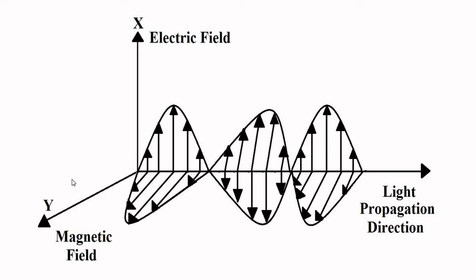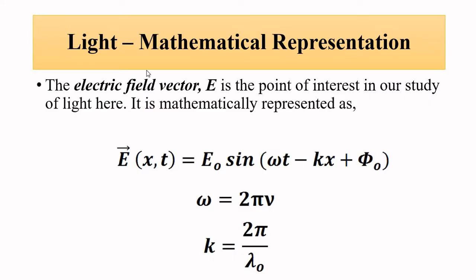The electric and magnetic field vectors are found in pairs in mutually perpendicular directions. We are mostly interested with the electric vector for optoelectronic communication systems. The electric field vector of a light wave is represented as E₀ sin(ωt − kx + φ₀), where ω is the angular frequency 2πν, k is the wave number, and φ is the phase constant.